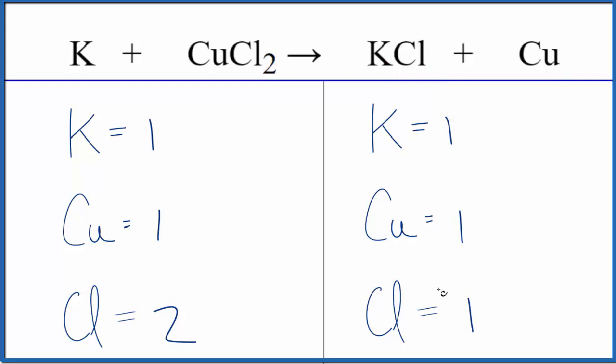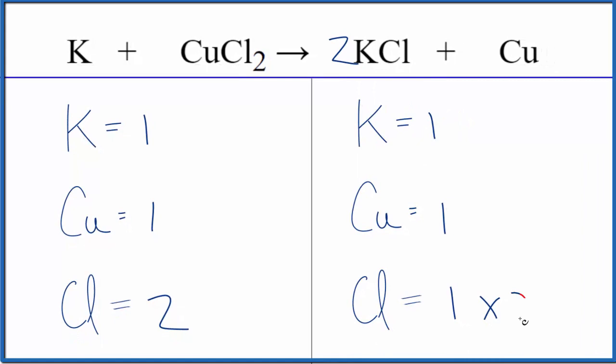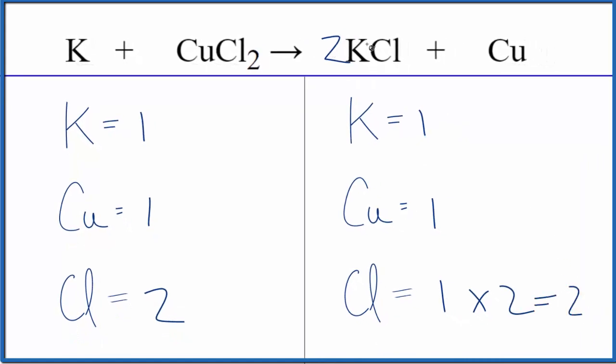So it looks like if we just put a two here in front of the KCl, we have one times two. That would balance the chlorine atoms. This two goes to everything though, so one times two. Now we have two potassium atoms, but that's okay.